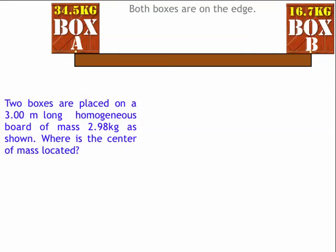To begin with in this example problem, I have two boxes on a beam. They're placed on a 3 meter long homogeneous board of mass 2.98 kilograms as shown. The question is, where's the center of mass? Now the boxes are on the edge, I mean it's barely balanced right on the edge, so their weight's going to act right on the edge of the beam.